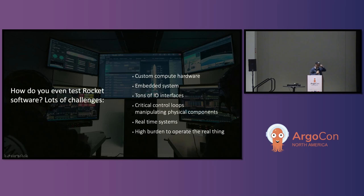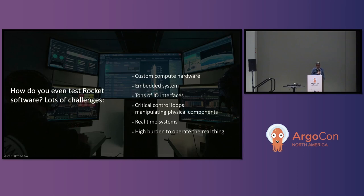Before we talk about Argo, we need to talk about how do you even test rocket software, which is something I've been learning over the past year. In order to test software that runs on a rocket, there are quite a few challenges. You've got multiple embedded systems — not Raspberry Pis or off-the-shelf reference boards, but typically custom hardware. You've got a lot of I/O interfaces and control loops that are meant to talk to physical things and receive data from sensors, and it's a high burden to actually operate the real thing.